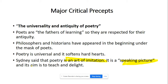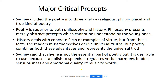The aim of poetry, according to Philip Sidney, is to teach and to delight — this is the main and most important aim. Sidney divided poetry into three kinds: religious, philosophical, and the true kind of poetry. He also argued that poetry is superior to both philosophy and history.